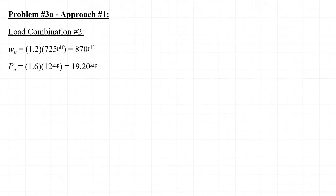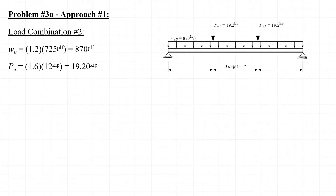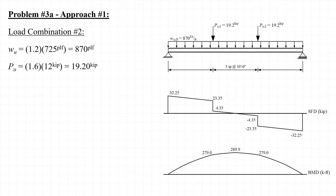Still using approach number one, we'll now apply the load factors included in load combination number two. The resulting factored dead load has a magnitude of 870 pounds per linear foot and the factored live loads each have a magnitude of 19.2 kips. Note that I use a subscript U for ultimate to indicate that these loads have been factored. From this loading, the maximum shear force occurs at each end of the beam with a magnitude of 32.3 kips, and the maximum bending moment occurs at mid-span with a magnitude of 290 kip-feet.